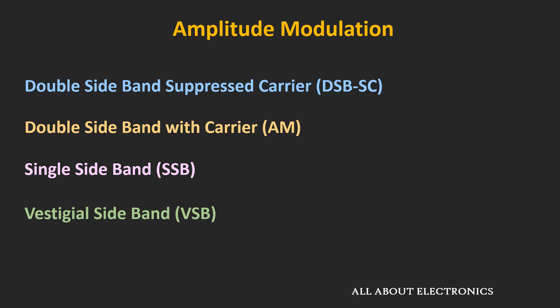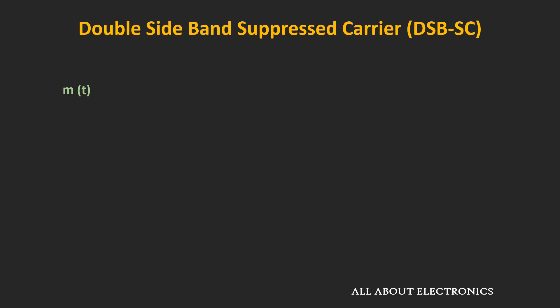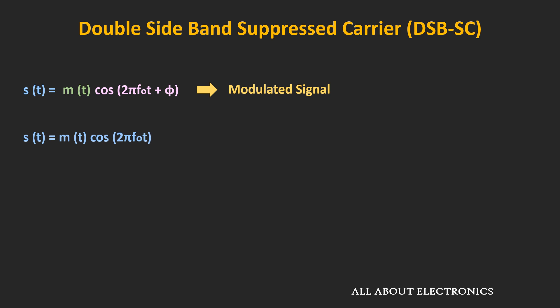In upcoming videos, we will also learn about the different modulation schemes. Let's say m(t) is the message signal or baseband signal, and cos(2πf₀t) is the carrier signal. In Amplitude Modulation, the amplitude of the carrier signal is a linear function of the message signal. If the amplitude of the carrier signal is made directly proportional to the message signal, then the modulated signal can be represented accordingly. For simplicity, we can assume the phase Φ is equal to 0. This is the expression of the modulated signal for DSBSC.